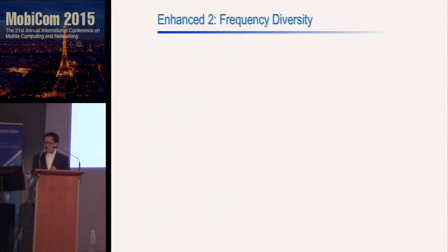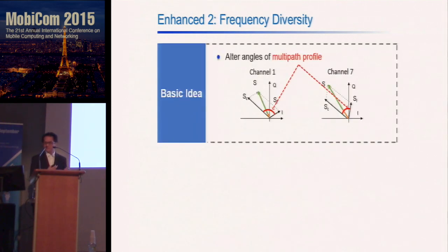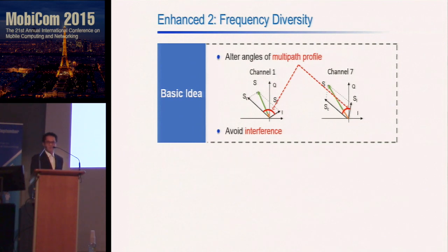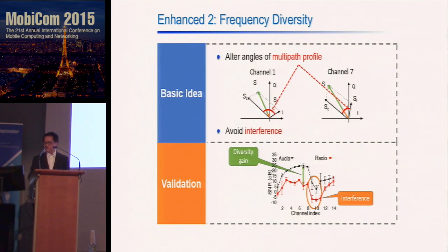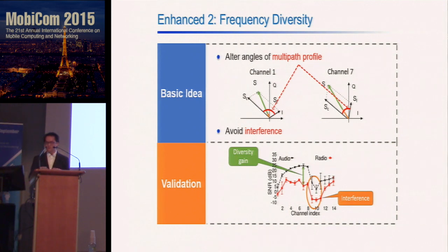The second mechanism is to leverage frequency diversity. Intuitively, changing the wireless center frequency changes the angle between the loudspeaker reflection and the background reflection, thereby changing audio quality. Another reason is that changing the center frequency can avoid interference from a nearby smartphone or other devices. We verified this with an experiment measuring radio SNR and audio SNR over different channels. Channels 6 and 14 have similar radio SNR but dramatically different audio SNR, confirming the frequency diversity effect.